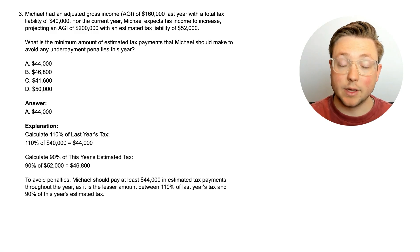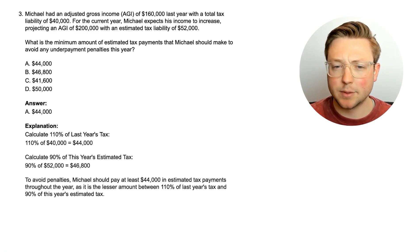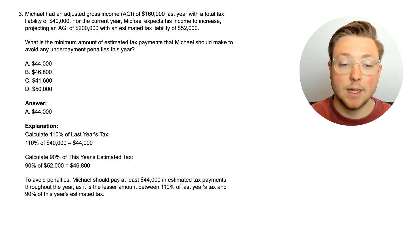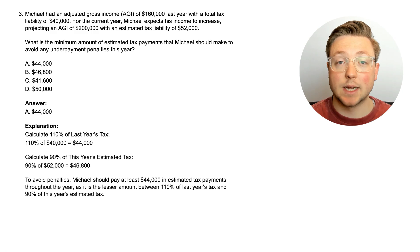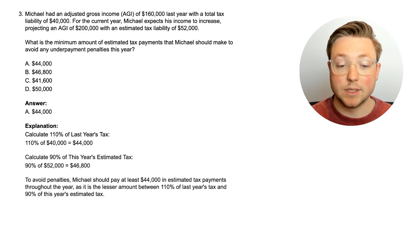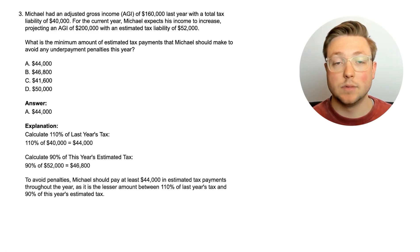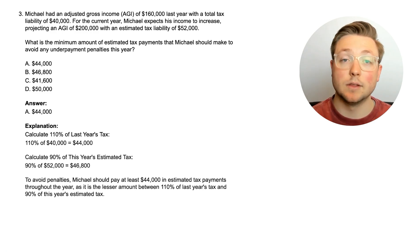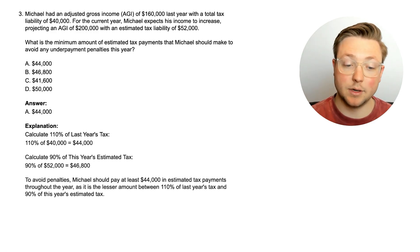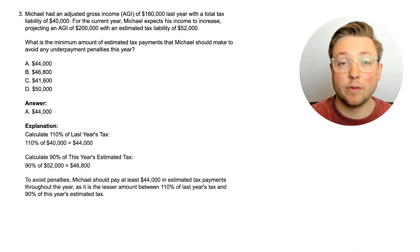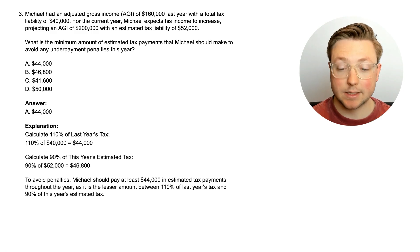You calculate 110% of last year's tax — that's because his AGI last year was over $150,000. So 110% of last year's tax liability is $44,000. 90% of the current year's tax liability is $46,800. So even though it's 110% of the last year's tax liability, that's still less than 90% of the current year's tax liability. He's going to take that, so he needs to pay at least $44,000 in taxes to avoid an underpayment penalty.